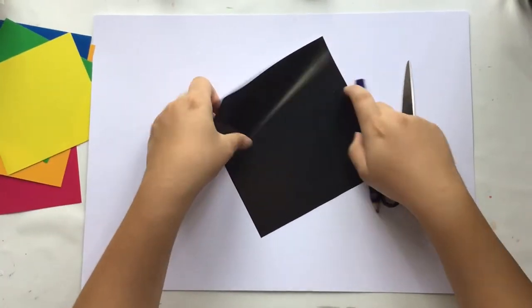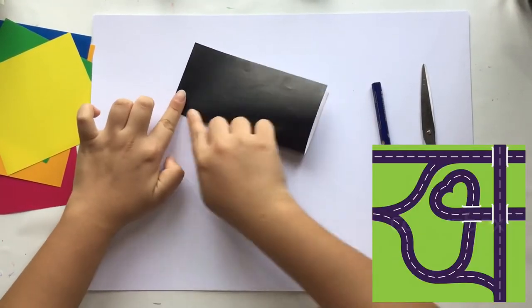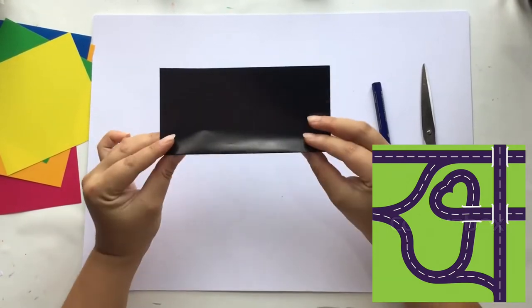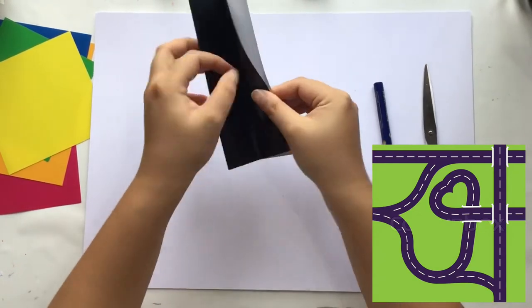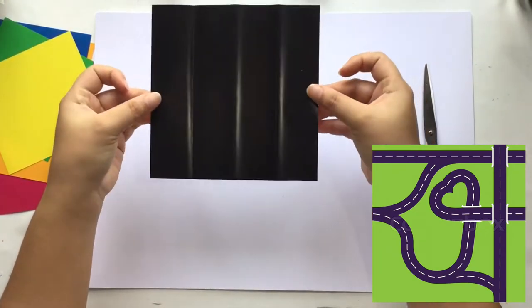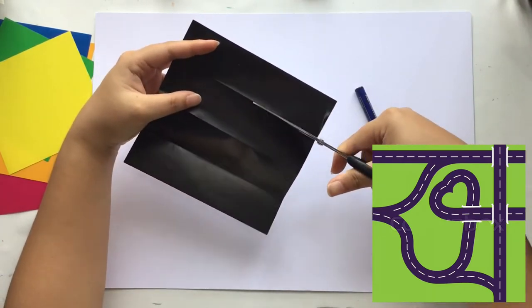Our first step, we are going to create the streets in the city. Use black origami paper and fold it into two, then fold it again one more time until it gets smaller. Open the paper and you will have a line, then you can cut along the line.